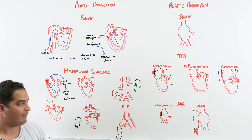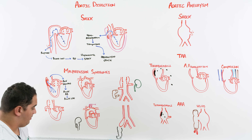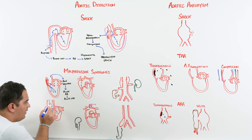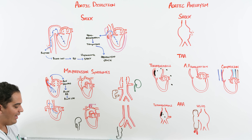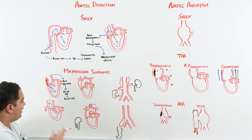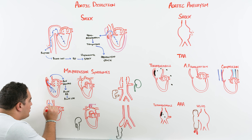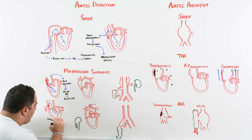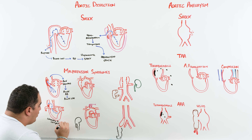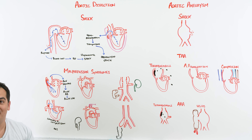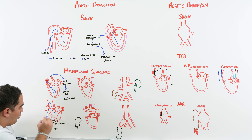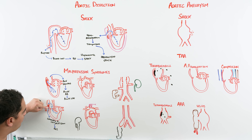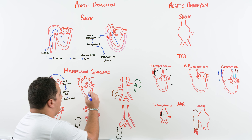Blood that rips through and creates a false lumen compresses the aortic valve, allowing blood to pop back into the left ventricle and cause acute CHF. Additionally, blood can track in and compress or narrow a coronary artery. Coronary artery compression leads to myocardial ischemia or myocardial infarction.